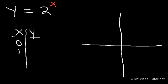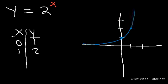Now, if we plug in 0 into the function, 2 to the 0 power is 1 — anything raised to the 0 power is 1. 2 to the 1st power is 2. And then simply plot the points. So we have the point (0, 1) and (1, 2). Start from the x-axis, that is the horizontal asymptote, and connect a graph to the two points. So that's the graph of the function.